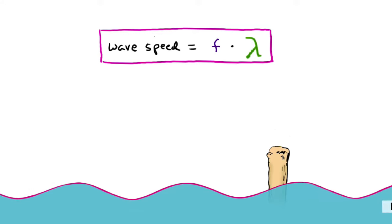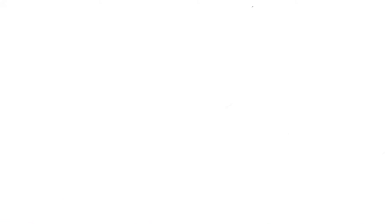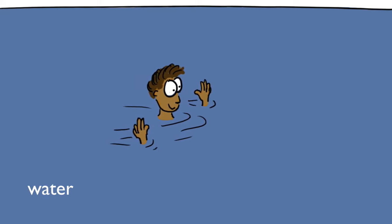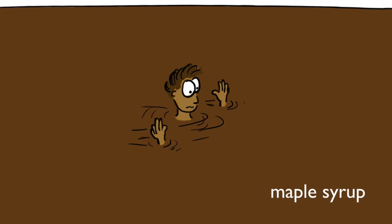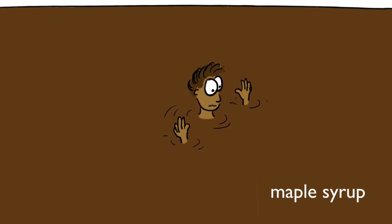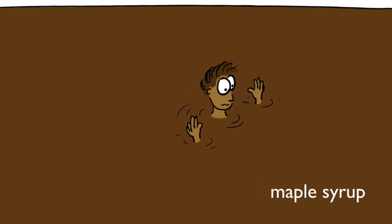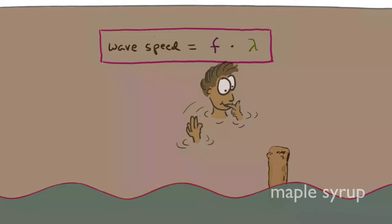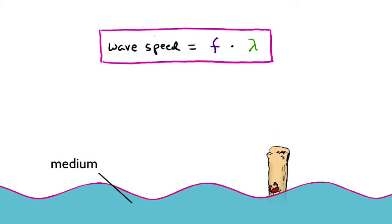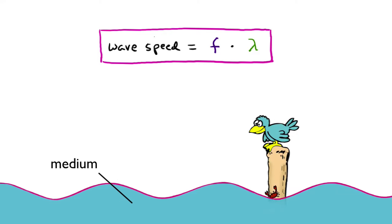So what determines the wave speed? Well, you know how it's easier to wade through a pool of water than through an equally deep pool of maple syrup? That's right. It's the medium through which you are traveling that determines how fast you can travel. The same holds true for waves. How fast waves travel depends upon, and only upon, the medium through which the waves are traveling.